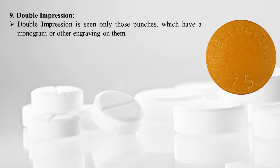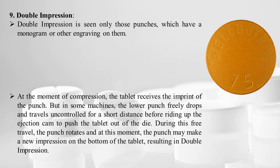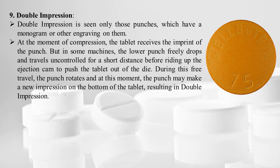Double impression is seen only on those punches that have a monogram or engraving on them — it occurs only on punches that have numbers, letters, or any identification marking on them.